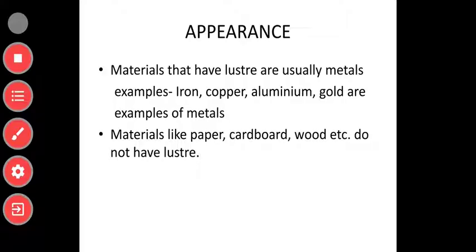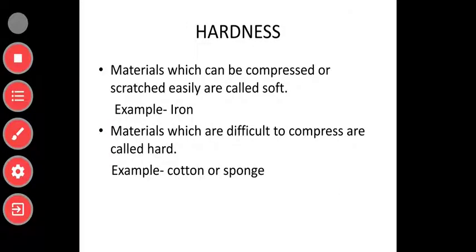Based upon their appearance, materials which can be compressed or scratched easily are called soft — example: cotton or sponge. Materials which are difficult to compress are called hard — example: iron. Note that the examples may be interchanged, so write whatever is correct in your notes.